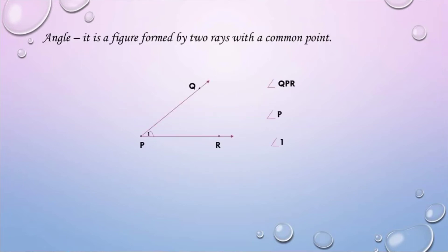Angle — it is a figure formed by two rays with a common point. We have here an angle with a common point of P. So therefore, you can name the angle in three different ways.